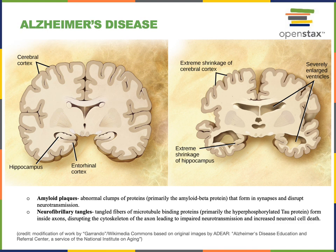The pathology of Alzheimer's disease involves abnormal clumps of proteins that form in the synapses and disrupt neurotransmission. These are known as amyloid plaques and are primarily formed from a protein known as amyloid beta. A mutation in the gene for the amyloid beta protein is one of the strongest risk factors for the early-onset form of Alzheimer's disease.